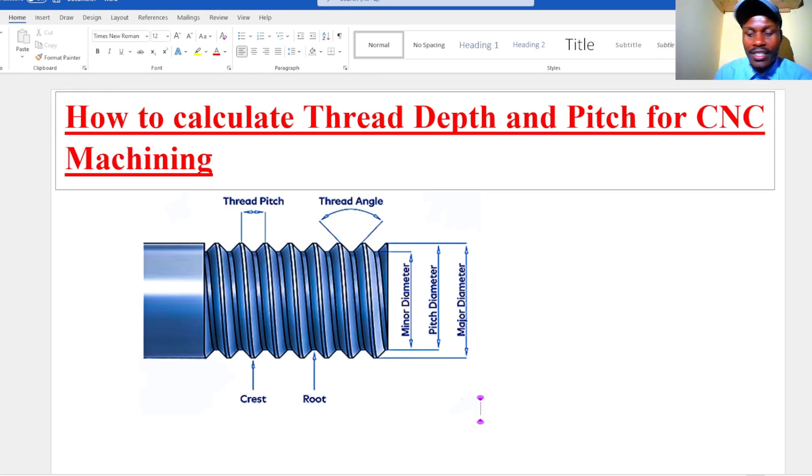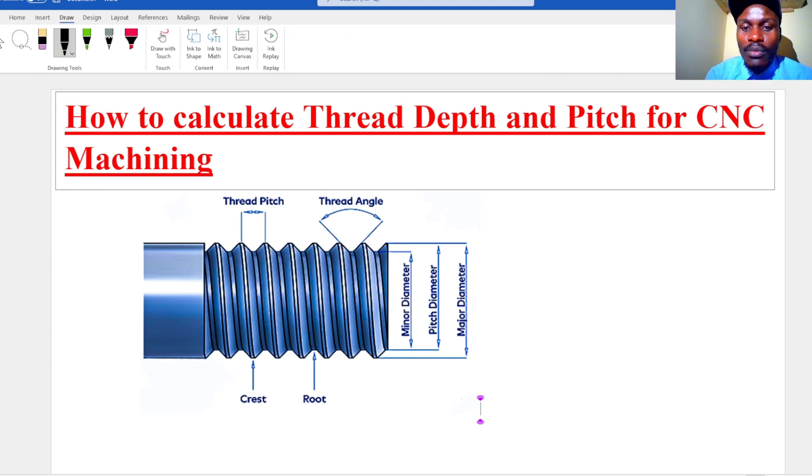Welcome to mechanical engineering design. In this tutorial, we are going to calculate thread depth and pitch for CNC machining. When machining a thread, it's very important that you know the pitch and also the depth of cut, especially when using Kent circle bolts. Bolts are named in this format: